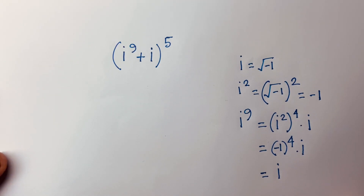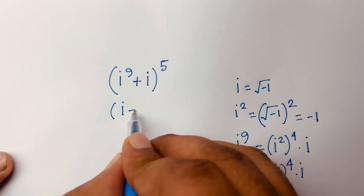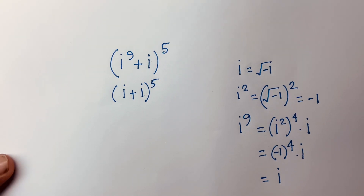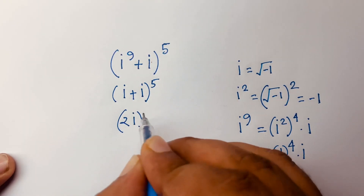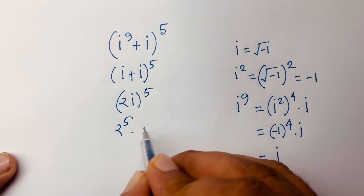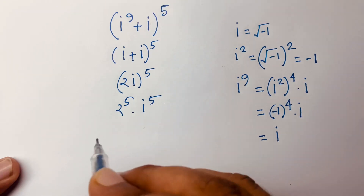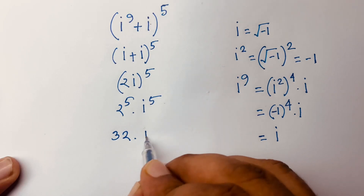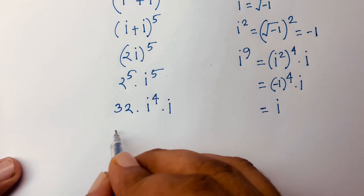So i to the power 9 equals i. Now for the second term, (2i) to the power 5 equals 2 to the power 5 times i to the power 5, which is 32 times i to the power 5. And i to the power 5 equals i to the power 4 times i.